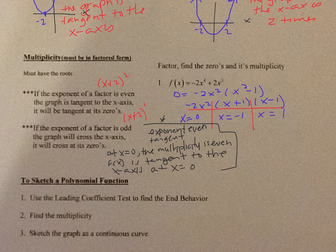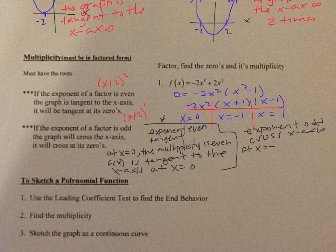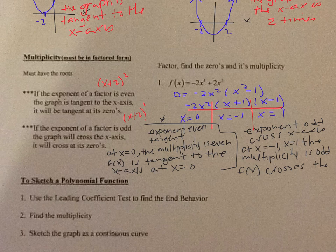My exponents for the other factors are 1s, so they're odd. When your exponent is odd, it will cross the x-axis. So at x equals negative 1 and x equals 1, the multiplicity is odd — f(x) crosses the x-axis at x equals negative 1 and x equals 1. The reason we want to know this is so we can draw a sketch of the graph without actually graphing it.